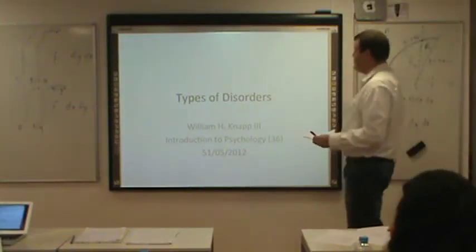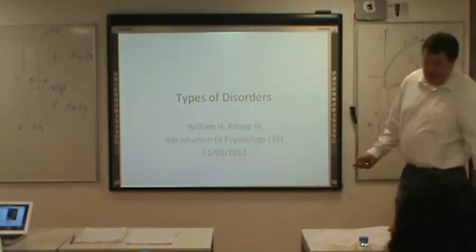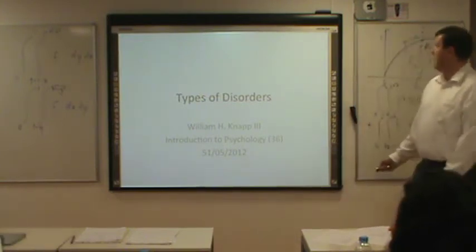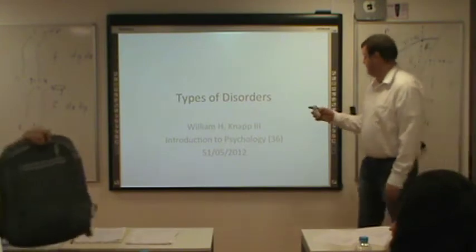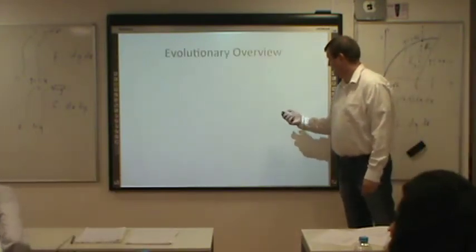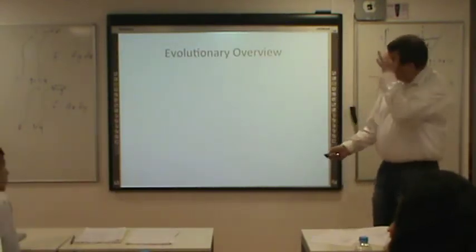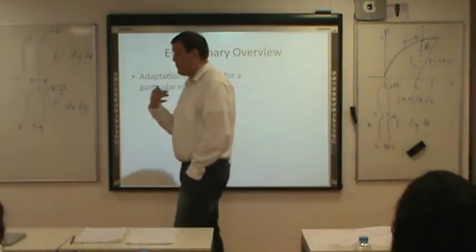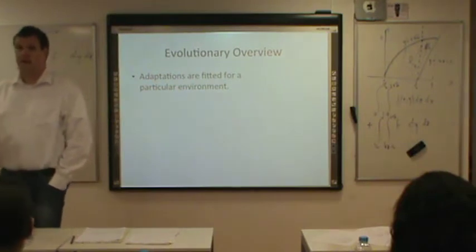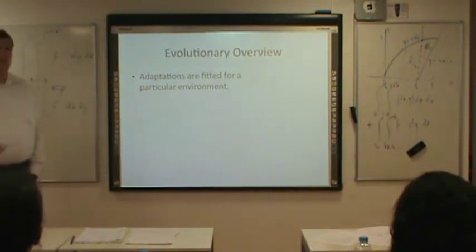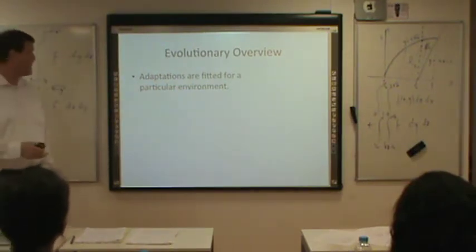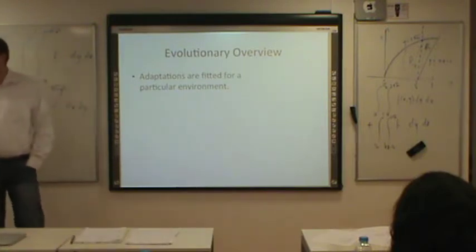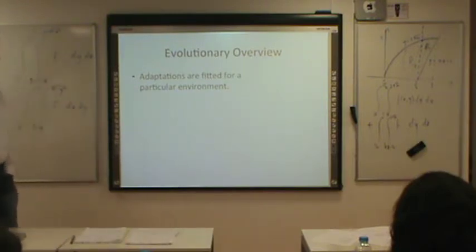Let's talk about some of the most common types of disorders that you may come across. Let's first take an evolutionary overview. The whole idea with evolution is that we possess characteristics and traits that have been adapted in the past. If they weren't adapted, they would have been selected against. So the reason we have things like memory and language is because it's provided some benefit to our ancestors.